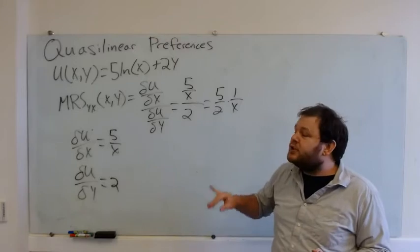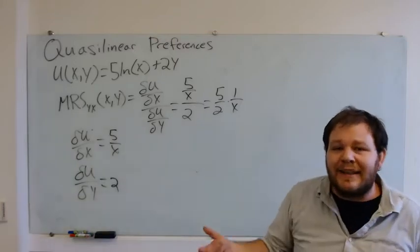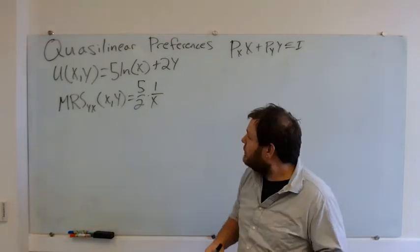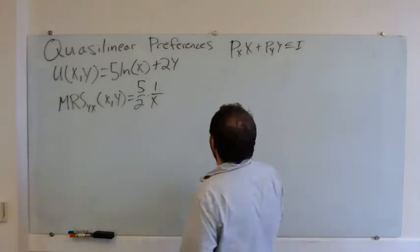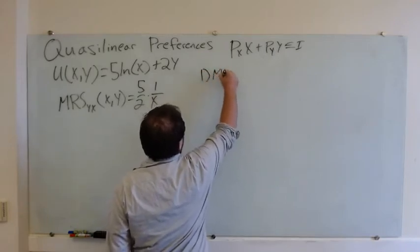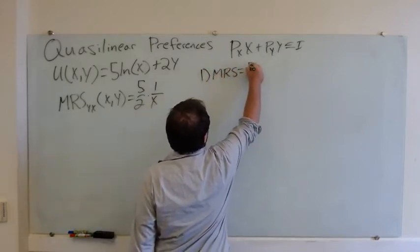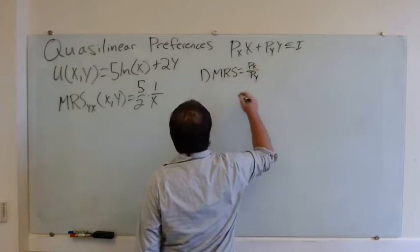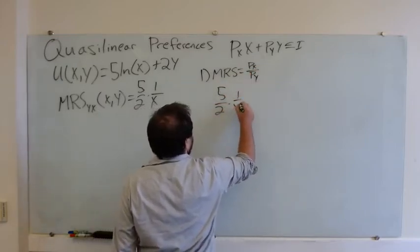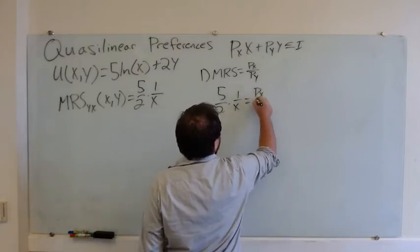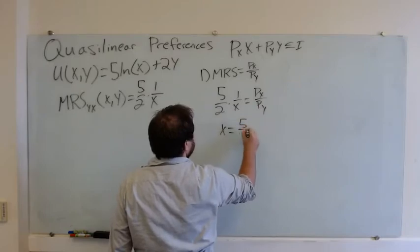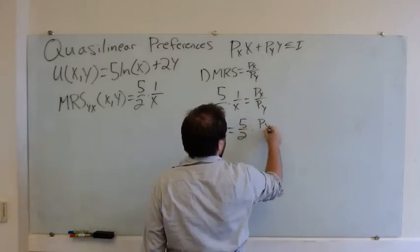So let's start by trying to solve an interior solution and see where that leaves us. If we're looking for an interior solution, we're going to first set our MRS equal to the price ratio. So we'll say 5/2 times 1 over x equals PX over PY, therefore x equals 5/2 times PY over PX.